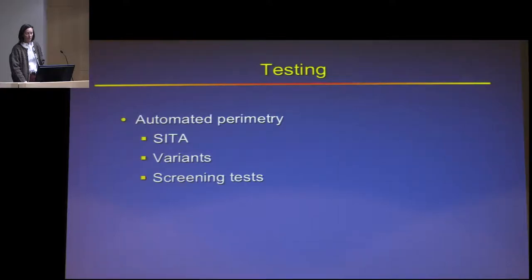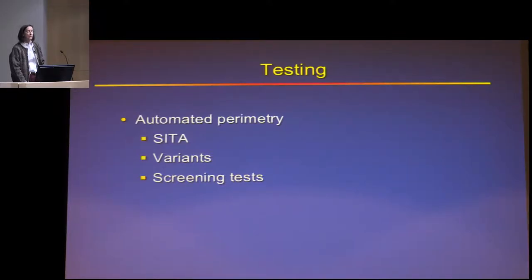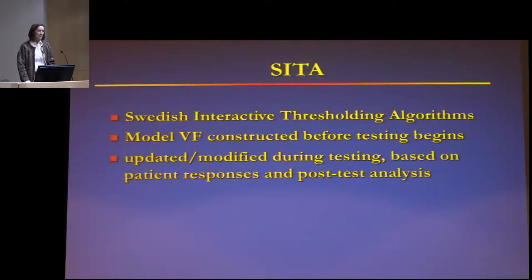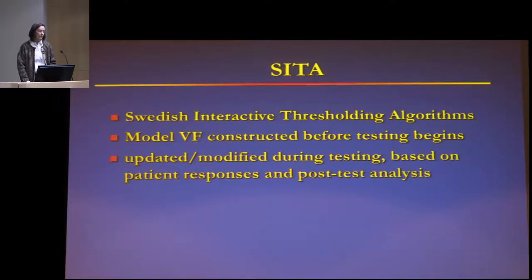Moving on to automated perimetry — almost everybody now uses some form of SITA. SITA stands for Swedish Interactive Threshold Algorithm. The machine assumes a certain visual field exists, then modifies and updates that estimate during testing. It does a few preliminary tests to decide how the patient is seeing and how quickly they're responding, then adjusts accordingly — unlike older methods where stimuli were presented at a fixed speed and brightness regardless of patient responses.